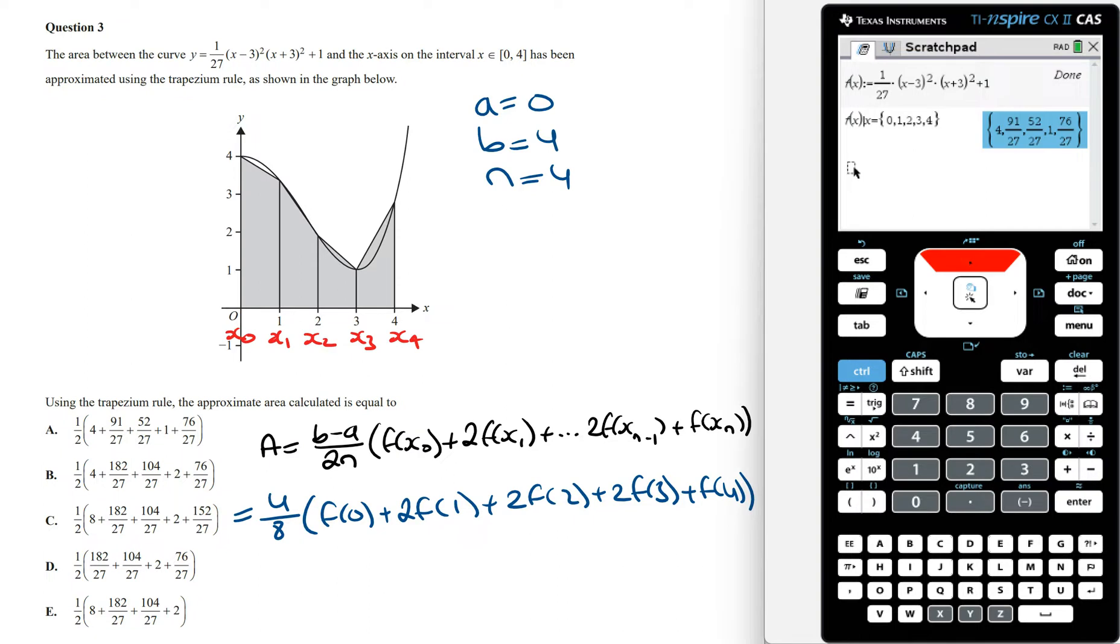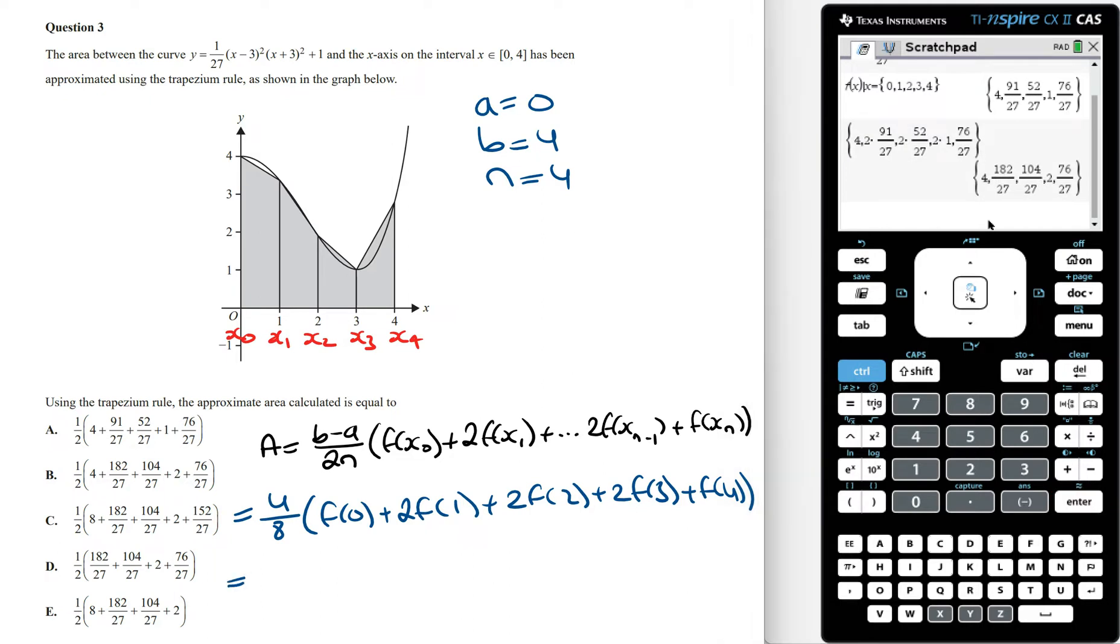And we want the three middle numbers to be multiplied by 2. And so the area is going to equal 4 on 8, which is the same as 1 on 2, multiplied by 4, plus 182 over 27, plus 104 on 27, plus 2, plus 76 on 27, which is option B.